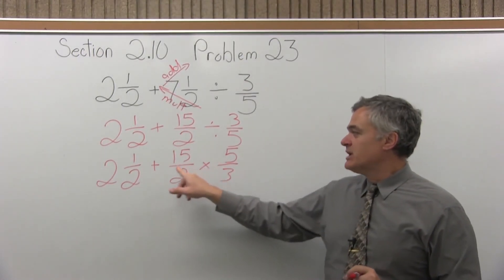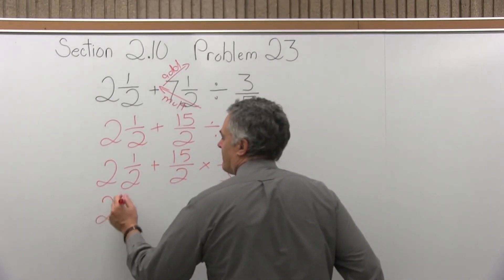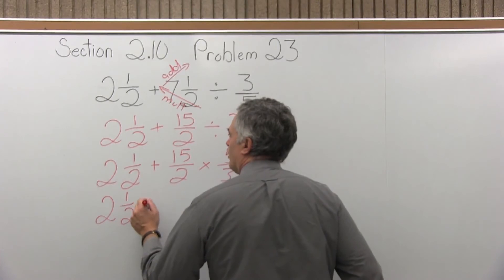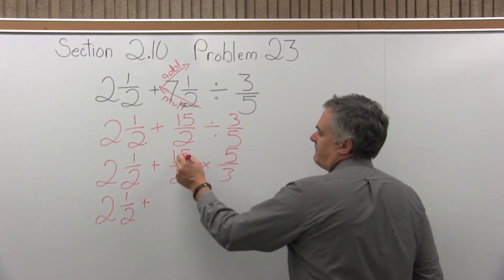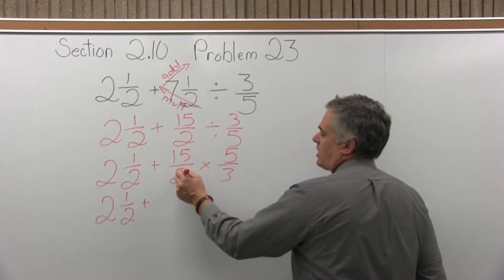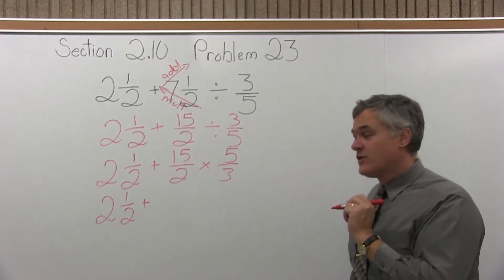Now I have to do the multiplication before the addition still. So two and a half plus I'm going to have fifteen times five on the top and two times three in the denominator. So I can reduce some of this first.